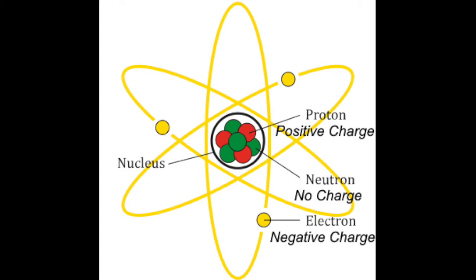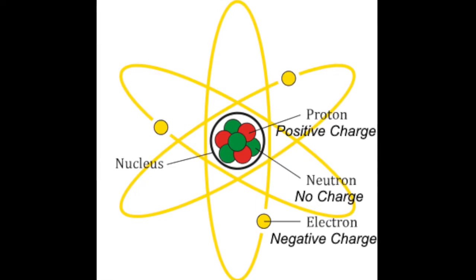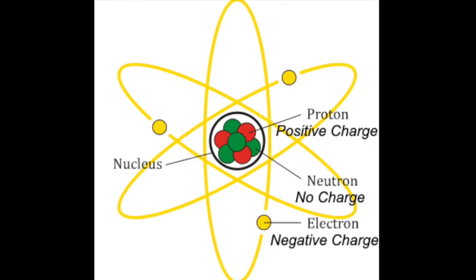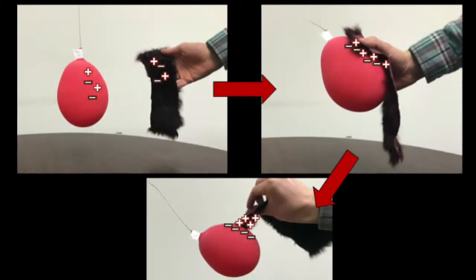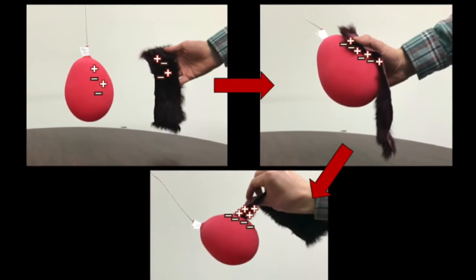These particles have a property called electric charge. The neutron has no charge, but protons have a positive charge and electrons have a negative charge. When two dissimilar materials come into contact, like this balloon and piece of fur, there is an exchange of electrons where one material takes some electrons from the other material.